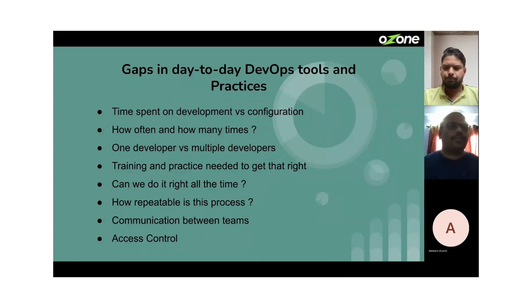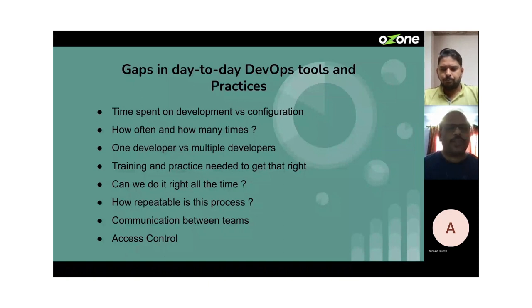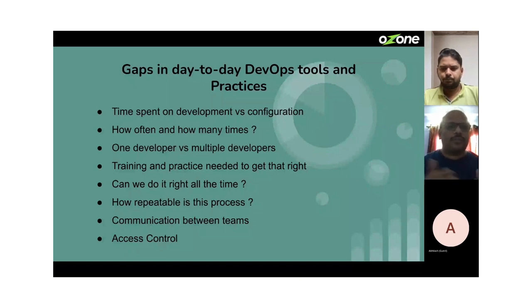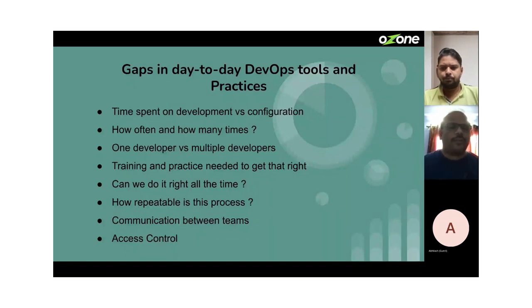In typical companies, you'll have multiple infrastructures — multi-cloud infrastructure where you have different setups for development and another for production. How do you control access between development and production workflows? That is another area where we have to improve a lot.